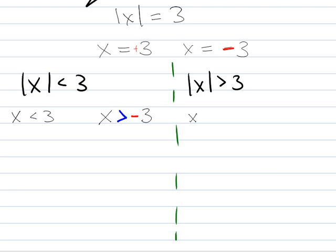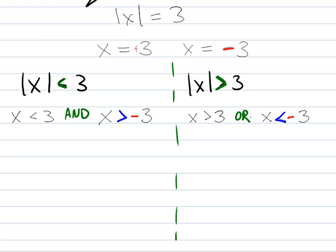So we're going to do the same thing on the right. Absolute value of x is greater than 3, so that means x is greater than 3. And then x — flip the sign — less than negative 3. Whenever you have a less than sign, the way you join these two is with an 'and.' Over here, if you have a greater than sign, the way you join them is with an 'or.'